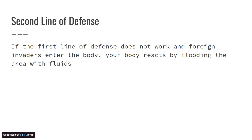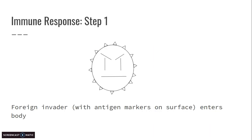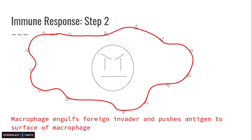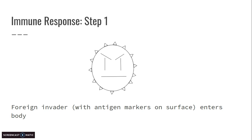So if the first line of defense doesn't work, then what happens is we get sick. Inside our body, a reaction has to occur. Step one in the immune response is: a foreign invader with antigen markers on the surface enters the body. You can draw that. Something else you can add is that a white blood cell will notice this and starts migrating its way over there — because of so many white blood cells in one area, it actually increases the temperature. That's why when something is infected, it feels swollen or really warm.